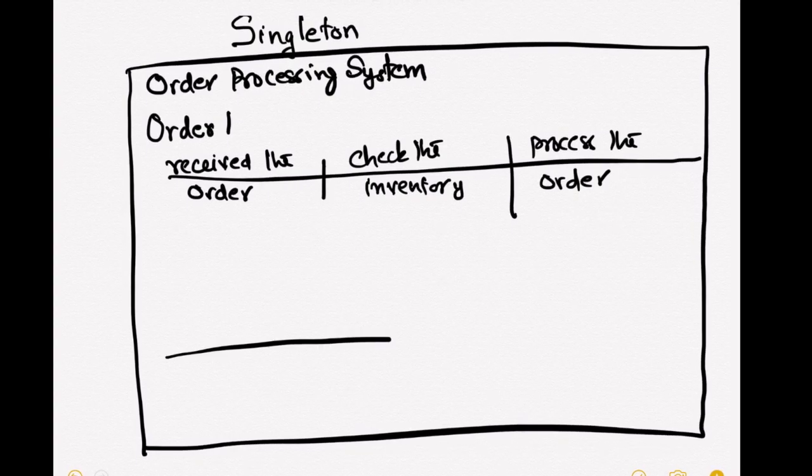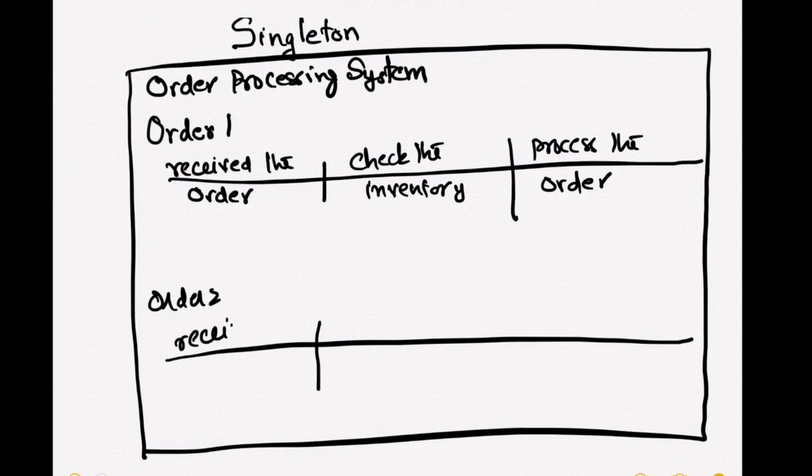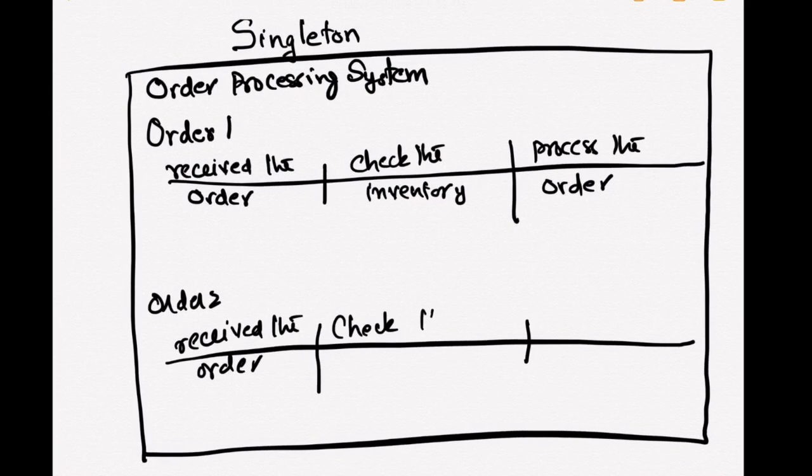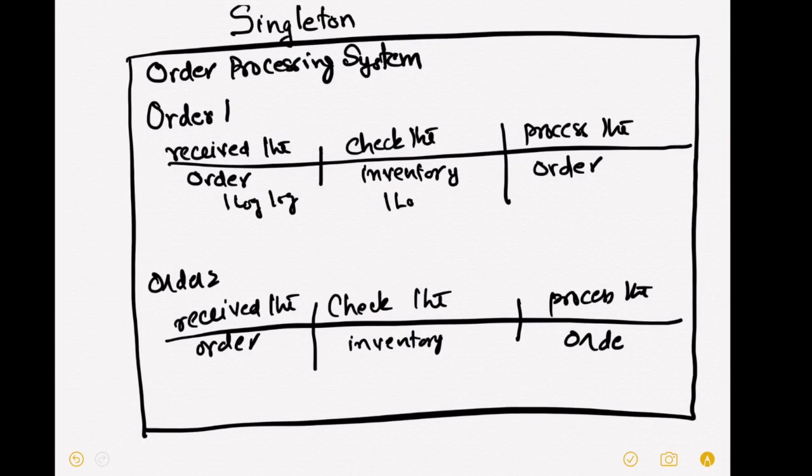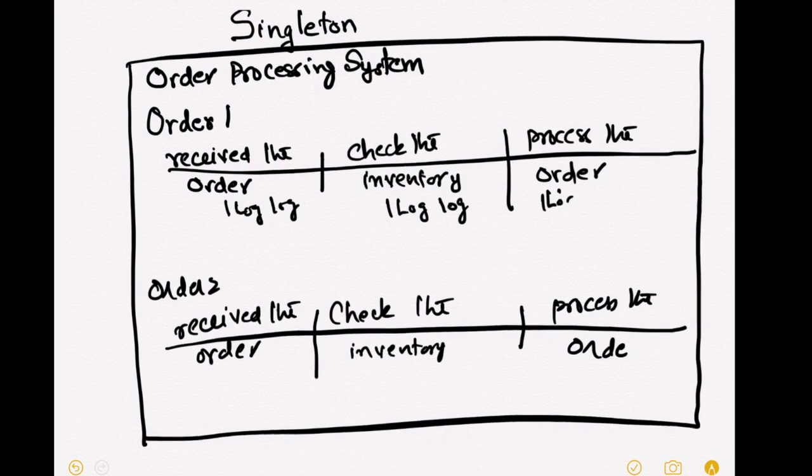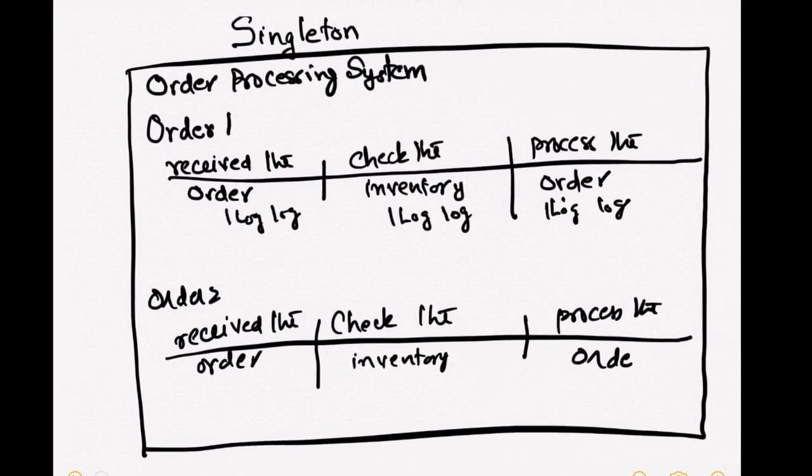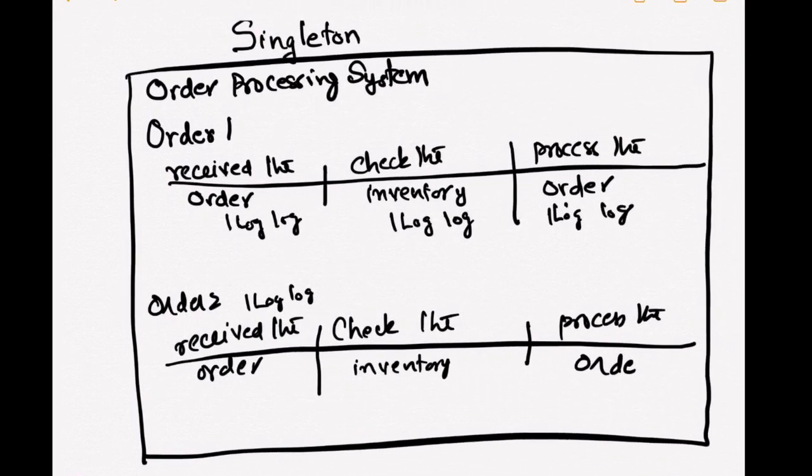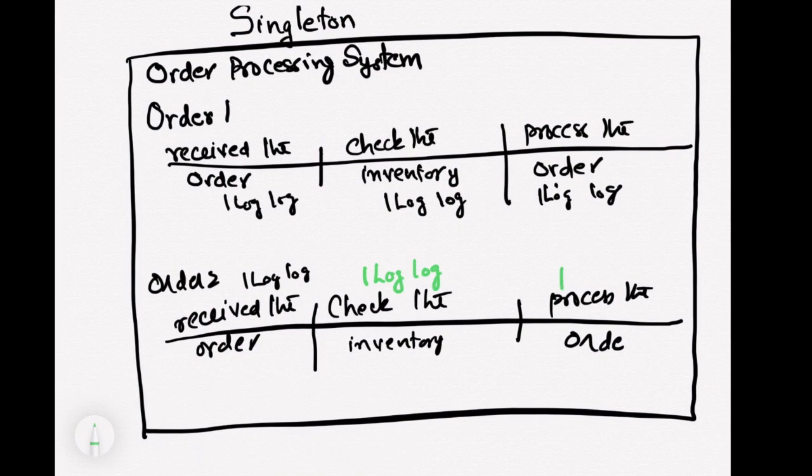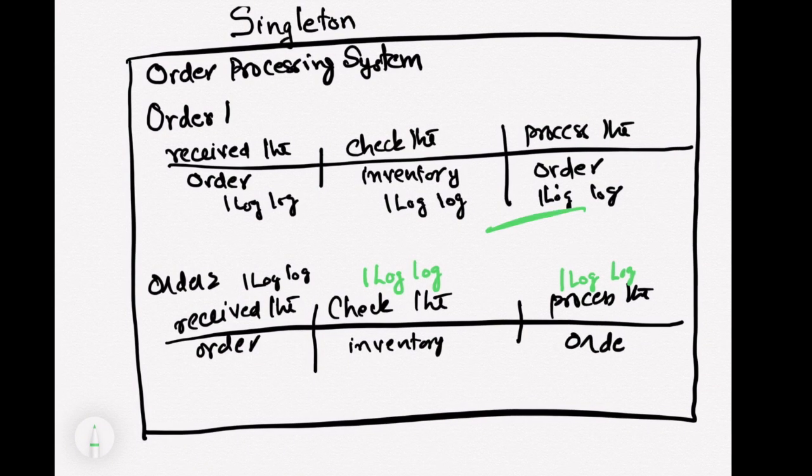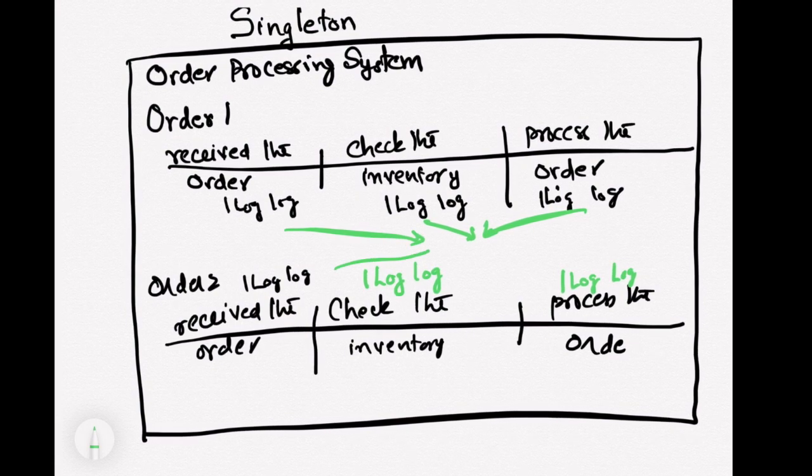So let's see the singleton. Same singleton, we are receiving two orders. We are checking the inventory, process the order. In singleton, what happens?